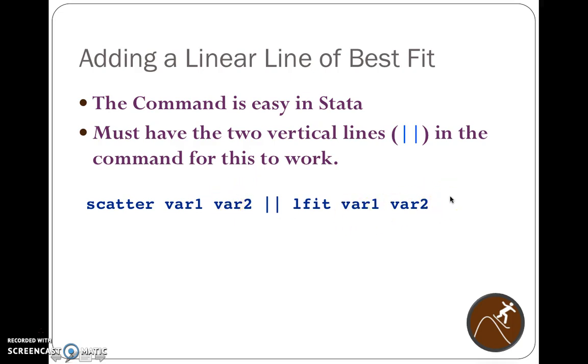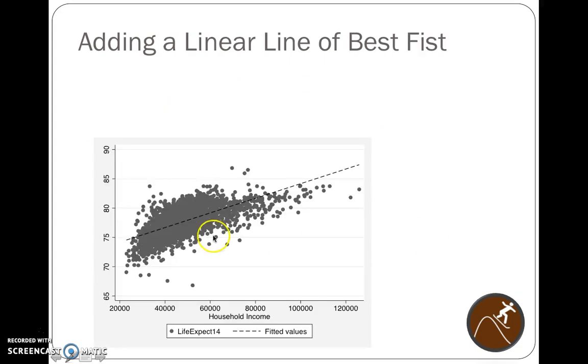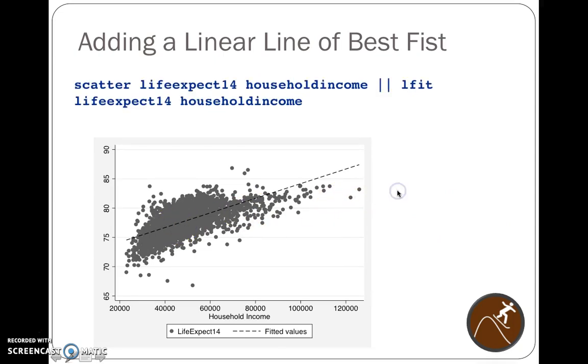So when you do that command with VAR1 being your outcome and both these being first, and then VAR2 being your predictors, you will get a line of best fit that looks just like that. So that's how you add a line of best fit. There visually is the command. It covers two lines of text. But that is the command. When you hit enter, you will get that type of figure. Very easy to do.